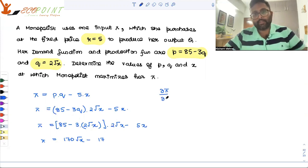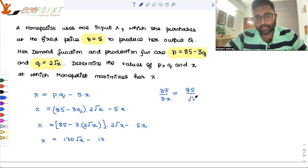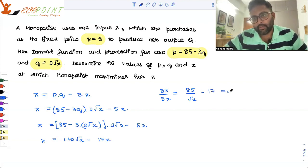So what is del pi by del x equals to? 85, 170 upon 2 root x, which is 85 upon root x. This is 17x minus 17 equals to 0, right? 85 upon root x equals to 17.